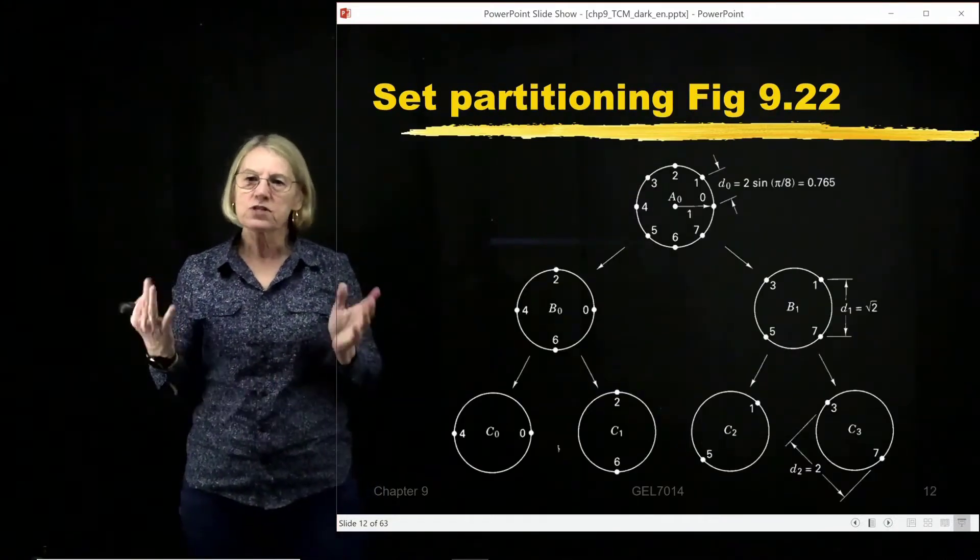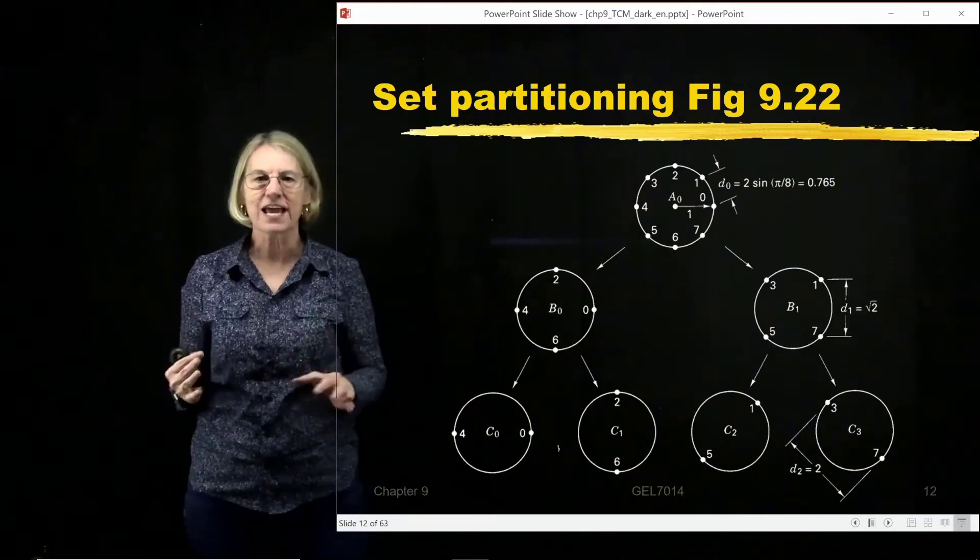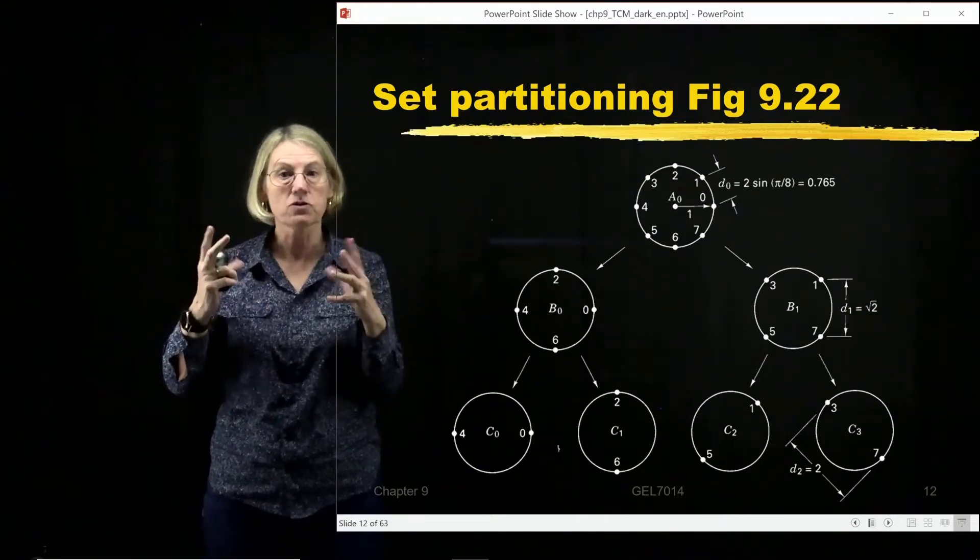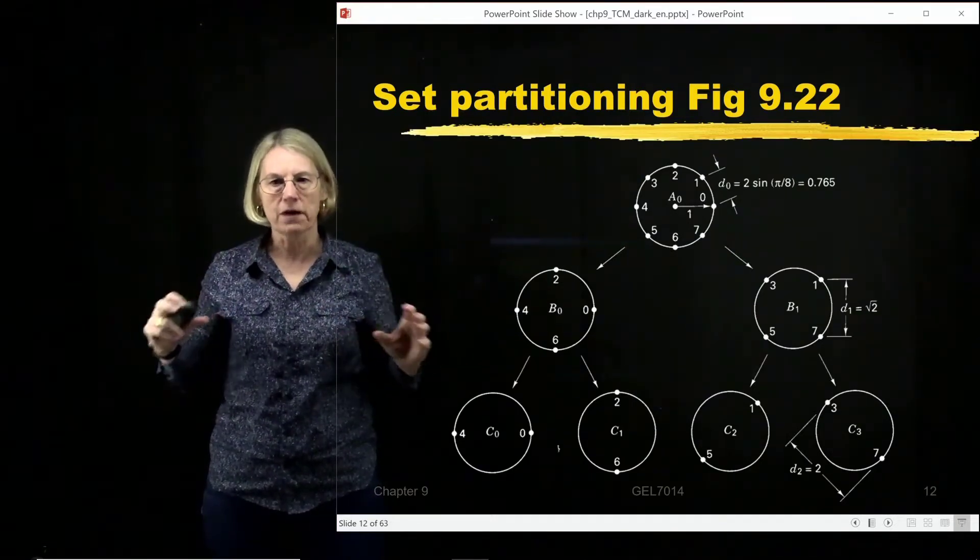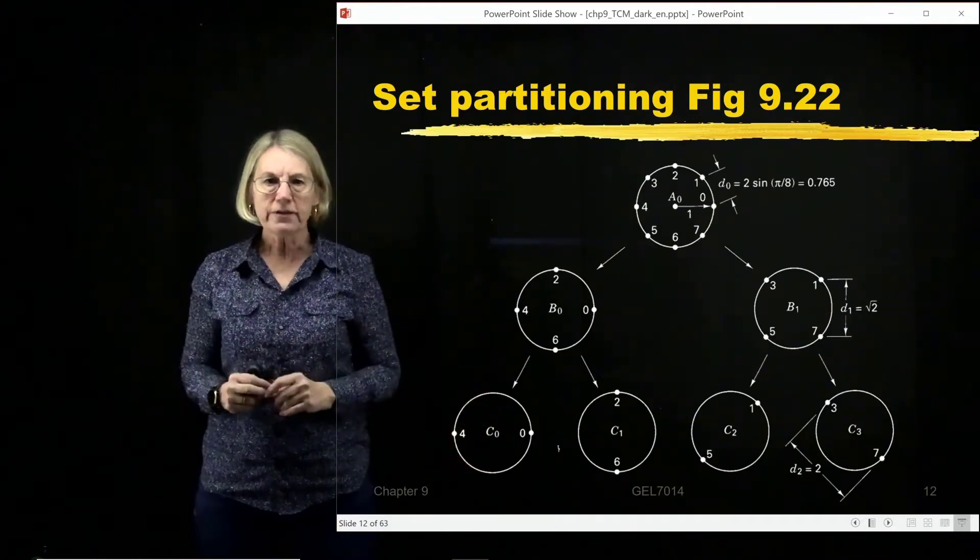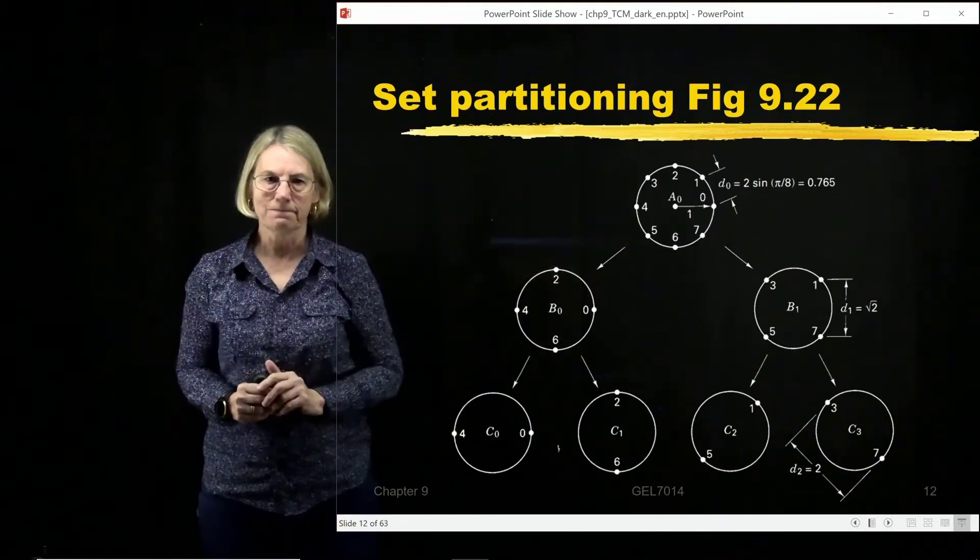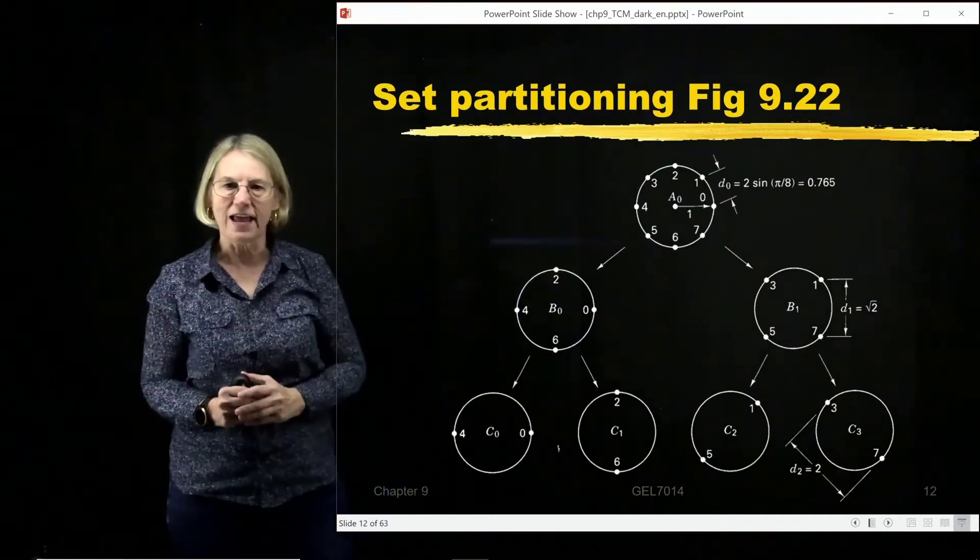We're going to do what's called set partitioning. Set partitioning is taking a collection of constellation points, a collection of symbols, and progressively dividing them until we get down to sets of two. I'm going to start in the first example with 8PSK, with 8 points named from 0 to 7.